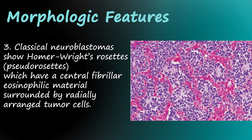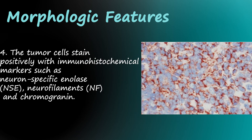Third, classical neuroblastomas show Homer Wright's rosettes — pseudorosettes — which have a central fibrillo-eosinophilic material surrounded by radially arranged tumor cells. Fourth, the tumor cells stain positively with immunohistochemical markers such as neuron-specific enolase (NSE), neurofilaments (NF), and chromogranin.